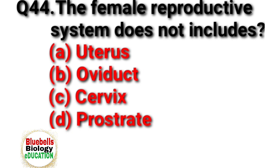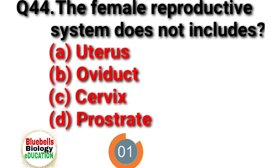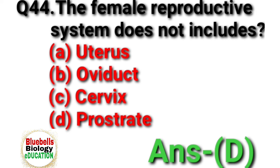Question 44. The female reproductive system does not include. Option A: uterus. B: oviduct. C: cervix. D: prostrate. Answer is D.